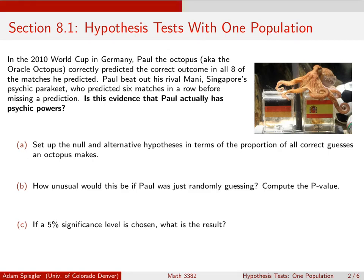In this video, I want to take a look at doing a hypothesis test, in this case on a proportion. The setting we're going to look at is in the 2010 World Cup, which took place in Germany. Various countries, in addition to having their soccer teams play each other, they had psychic animals trying to predict the outcome of the events.